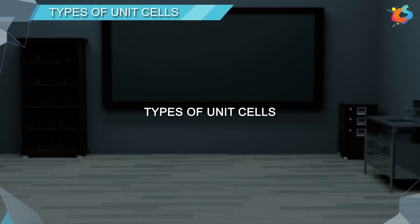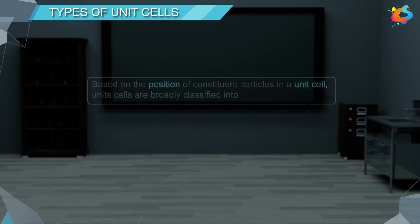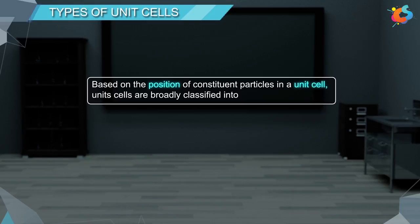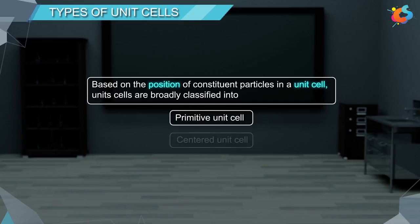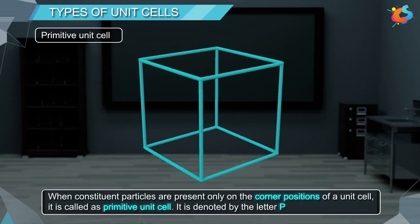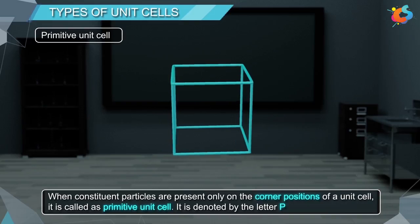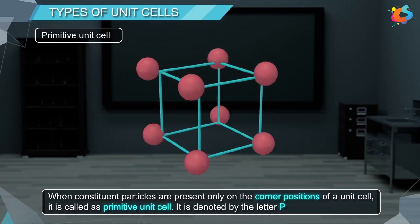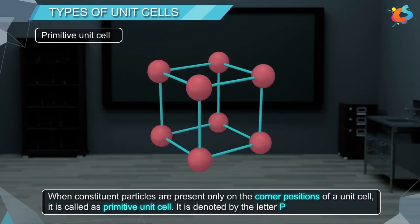Types of Unit Cells: Based on the position of constituent particles in a unit cell, unit cells are broadly classified into Primitive Unit Cell and Centered Unit Cells. When constituent particles are present only on the corner positions of a unit cell, it is called a Primitive Unit Cell. It is denoted by the letter P.